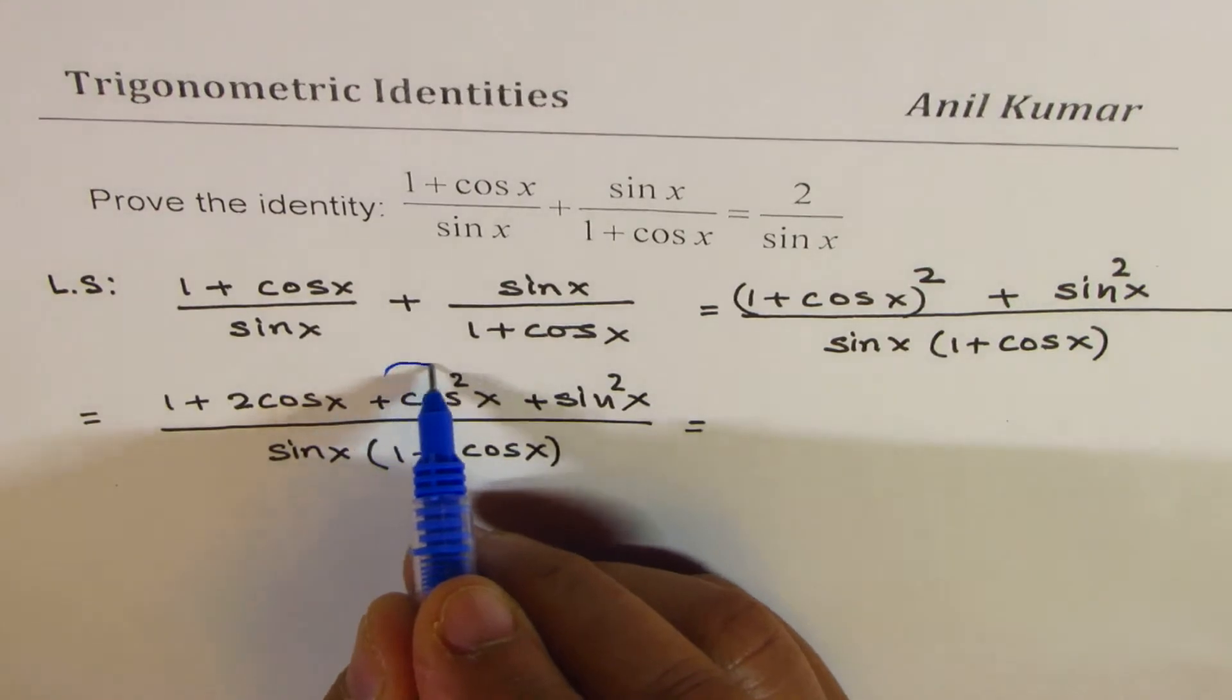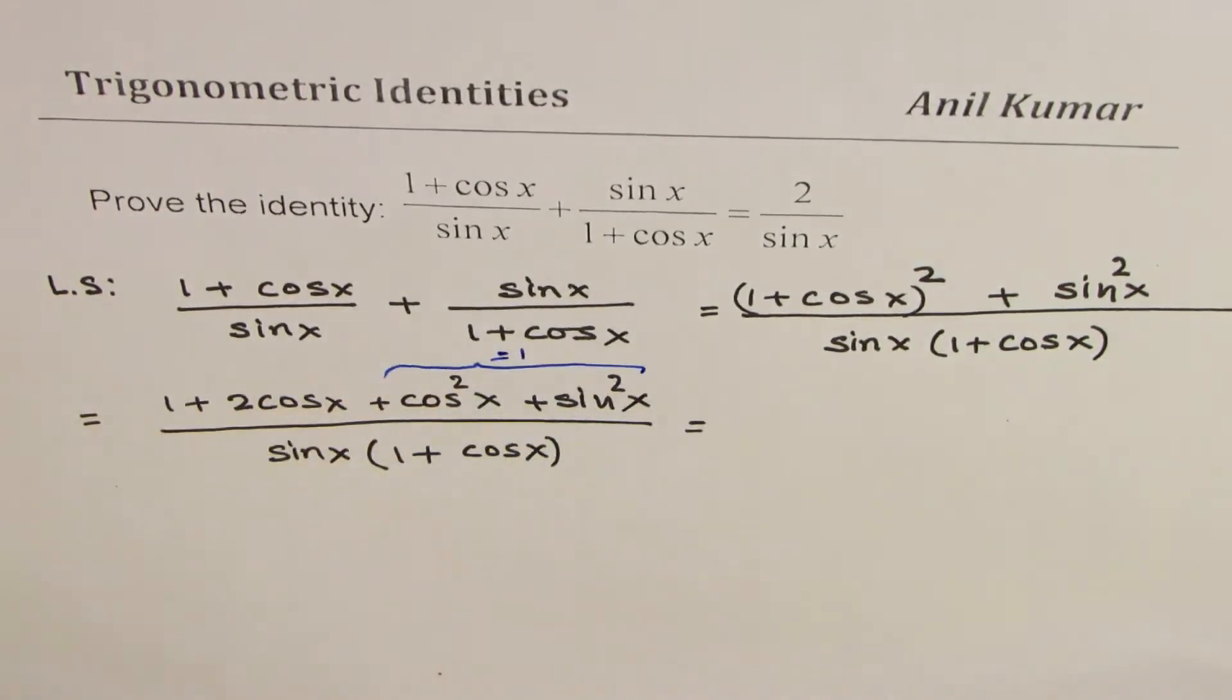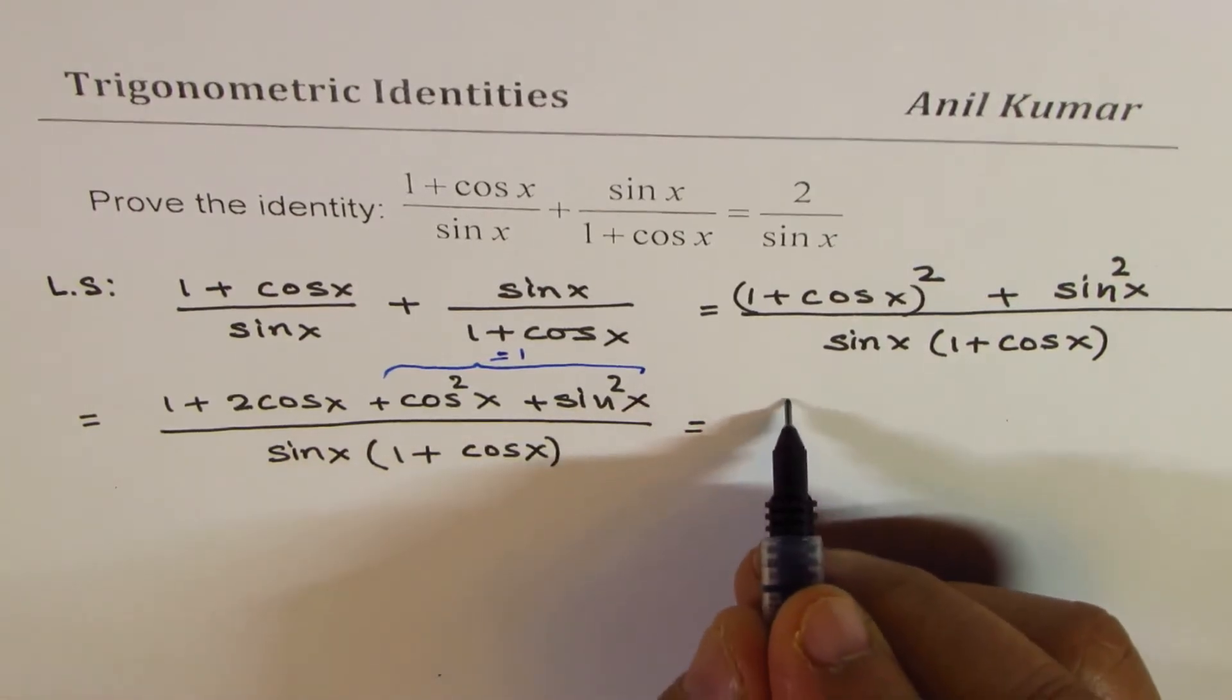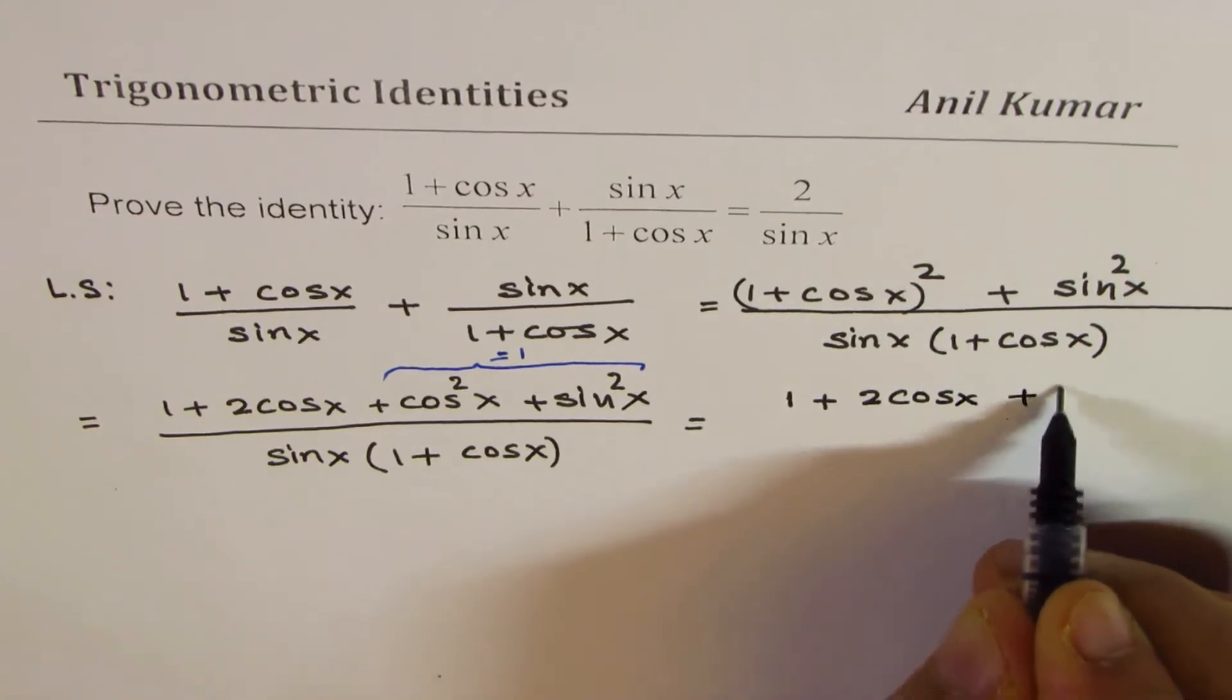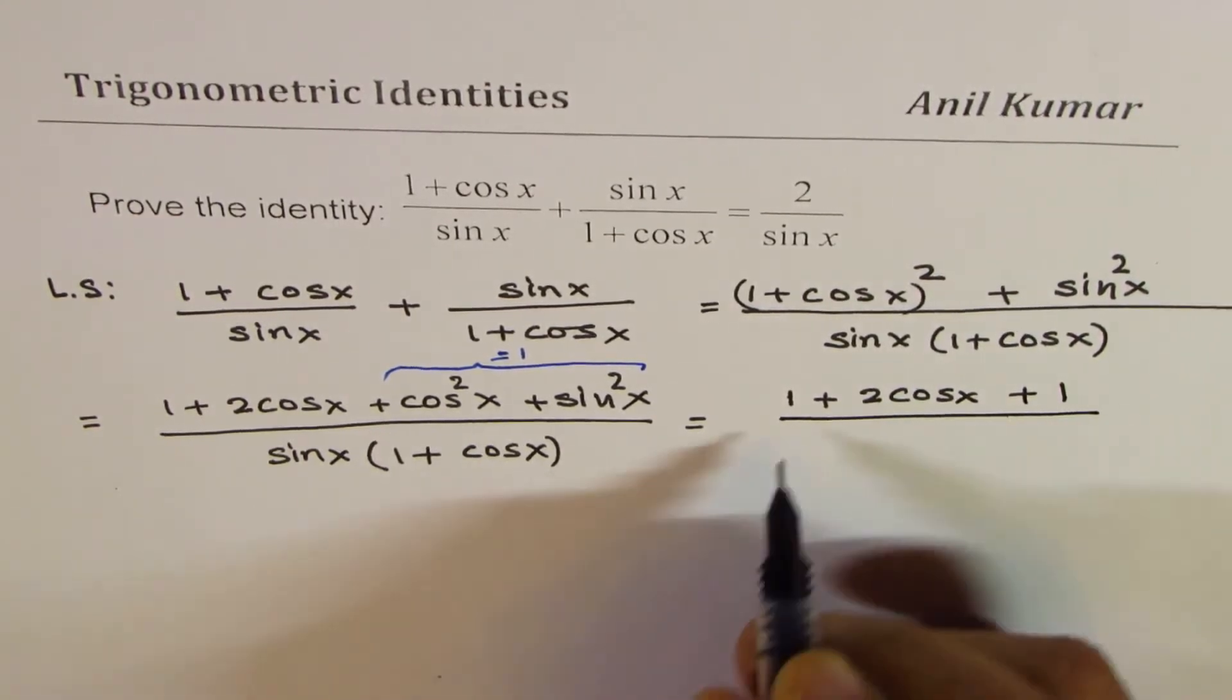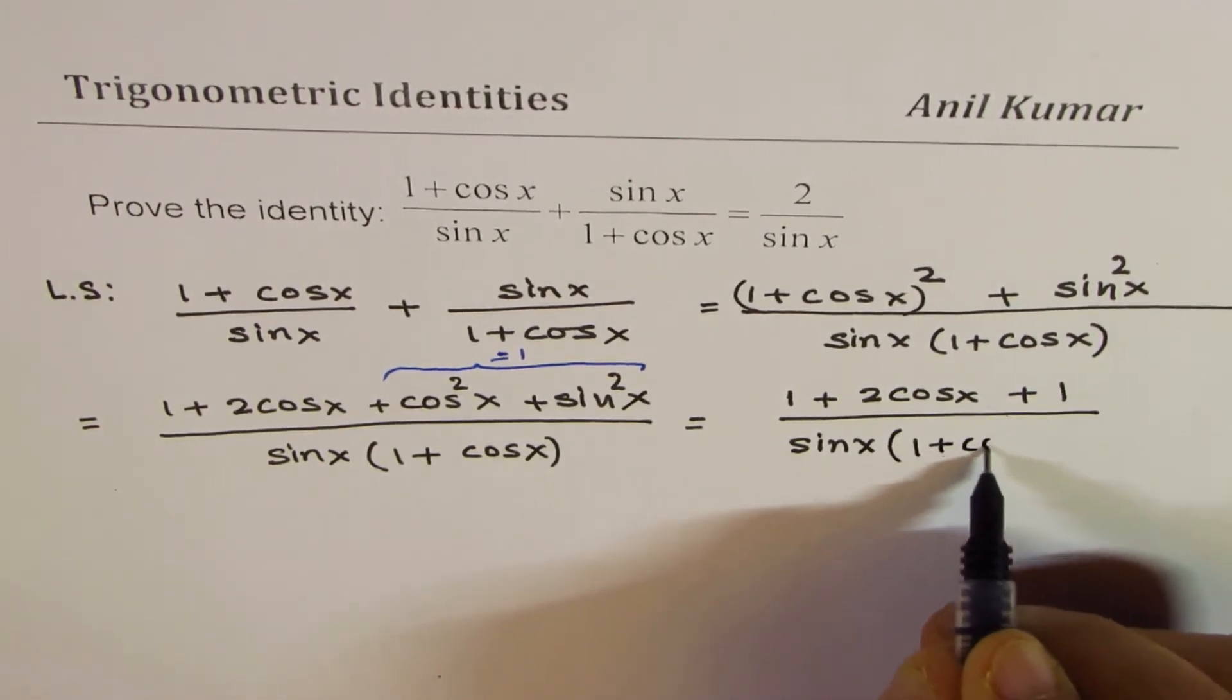This is, as you know, a Pythagorean identity. This is equal to 1. And therefore, we can write this as 1 plus 2 cos x plus 1 divided by sin x times 1 plus cos x.